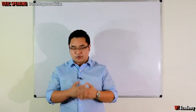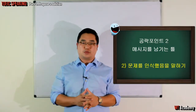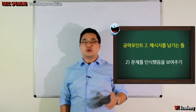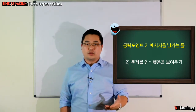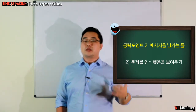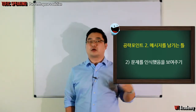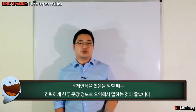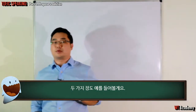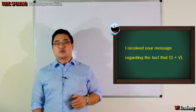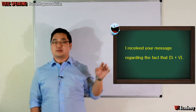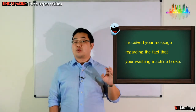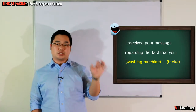Moving on to the next part: first part is stating the name, and the second part will be confirming the issue. Before the receiver states the solution, they have to acknowledge that they understand the problem. You have to pay close attention to the voicemail to figure out what the main issue is. One or two sentences should be enough to explain that you have understood the problem. For example: 'I received your message regarding the fact that your washing machine broke' — washing machine is the subject, broke is the verb.